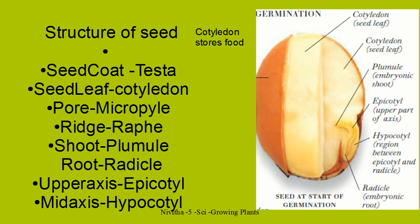There is a plumule — the plumule is an embryonic shoot. The plumule is the portion from where the stem, branches, and leaves of the tree come out. What is a radicle? The radicle is the embryonic root — the place from where the root comes out. Plumule is the place from where the shoot comes out in the new tree.